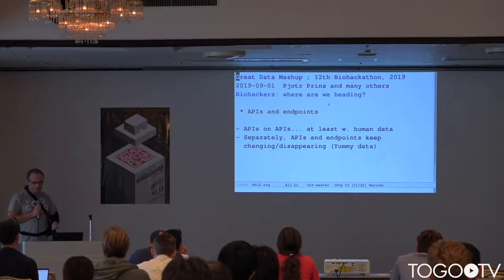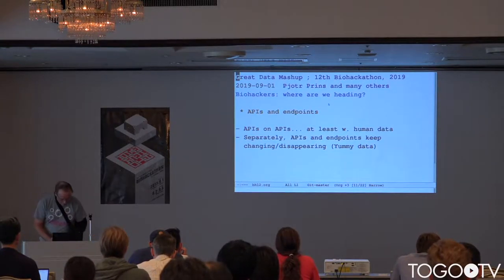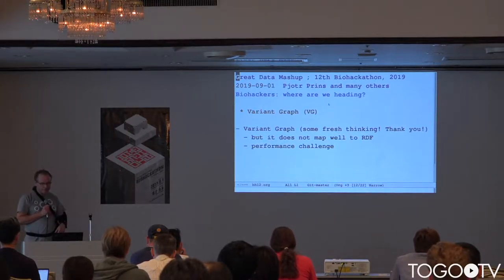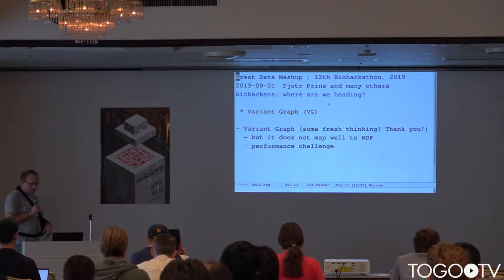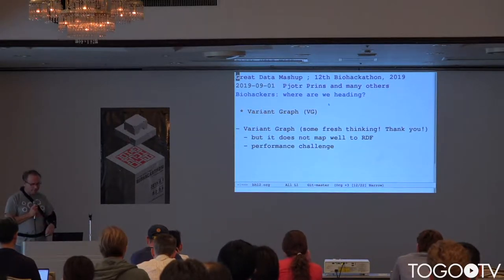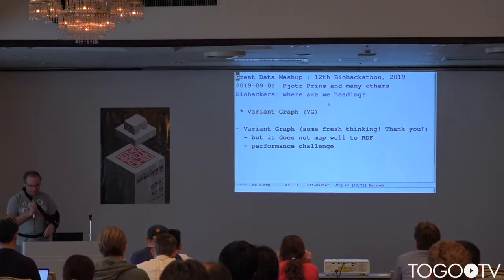The problem with APIs and endpoints is they keep changing. They disappear — if you check EMBL data, it's very clear. The other direction we're heading is with the Variant Graph, and I think that's a really great achievement. We had so many good talks, and so many people are working on this. Another thank you to the Biohackathon organizers. But one problem with Variant Graph is it does not really map well to RDF — we have some performance issues there.